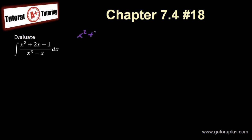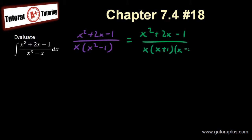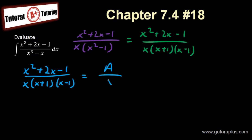So if I factorize the bottom, x squared minus 1 can be separated into x plus 1 and x minus 1. Now, if I do partial fraction, I have x squared plus 2x minus 1 over x times (x plus 1) times (x minus 1) equals A over x plus B over (x plus 1) plus C over (x minus 1).